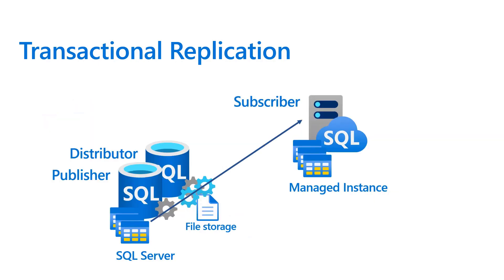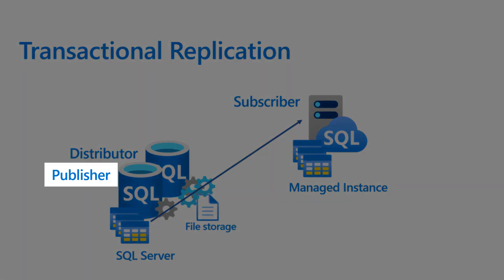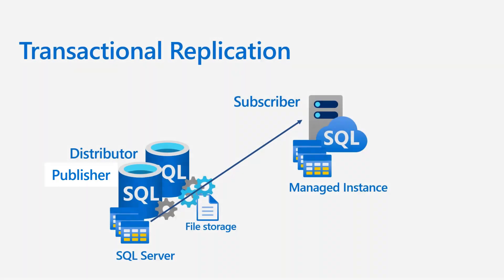Publisher, distributor, and subscriber are the main components of transactional replication. Publisher is the source of the replication — it defines the set of data that is to be replicated. It is responsible for creating the initial snapshot of the data and then later it sends all the changes made on the source to the distributor.